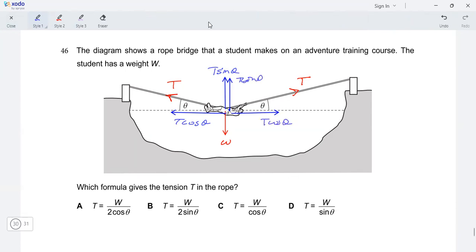Okay, now the student is hanging and he's basically in equilibrium. Equilibrium means the forces need to be balanced.